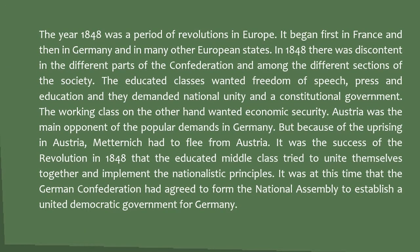The educated classes wanted freedom of speech, press, and education, and they demanded national unity and a constitutional government. The working class wanted economic security. Austria was the main opponent of the popular demands in Germany, but because of the uprising in Austria, Metternich had to flee. It was with the success of the revolution in 1848 that the educated middle class tried to unite and implement nationalistic principles, and the German Confederation agreed to form a national assembly to establish a united democratic government for Germany.